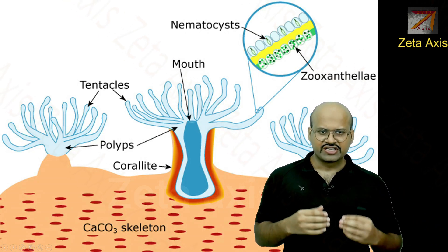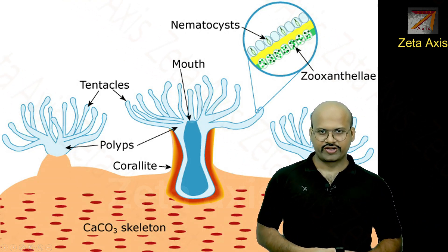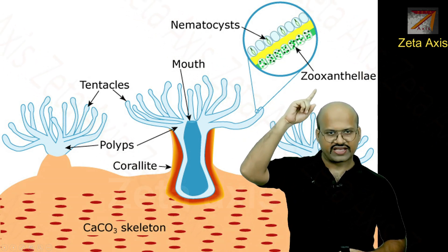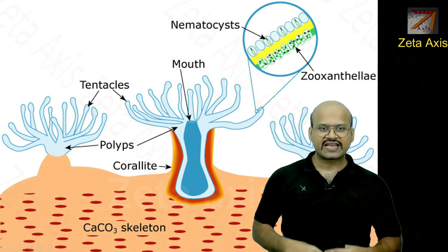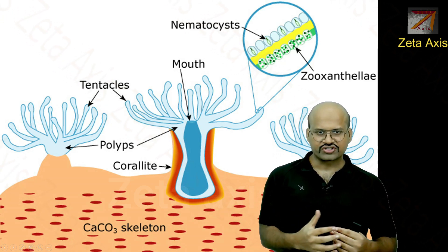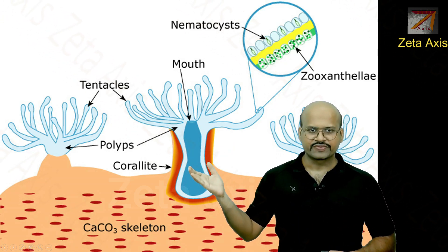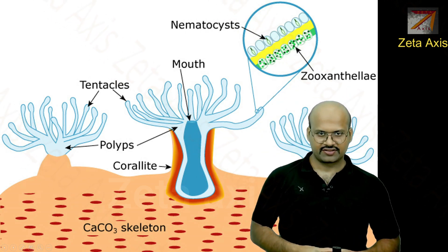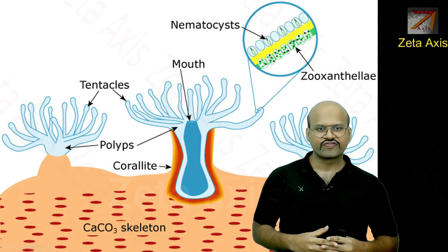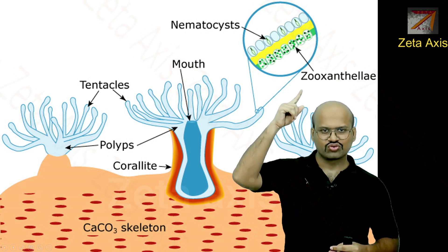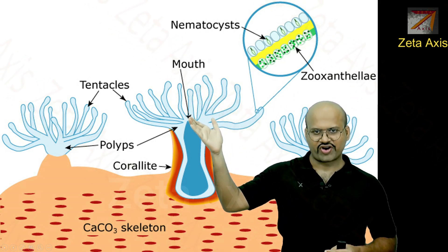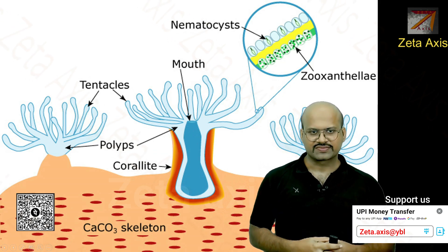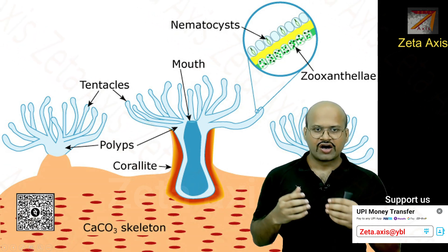Now there is one important property of these polyps. In the tissues of the polyps we have zooxanthellae. This zooxanthellae is an algae which performs photosynthesis, and the polyps mainly depend on the zooxanthellae for their food supply. 90% of the food supply is provided by zooxanthellae and only 10% is provided by the tentacles, which are used for catching small organisms like small fish or small phytoplankton.